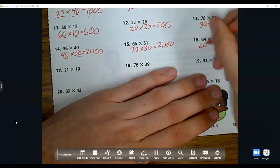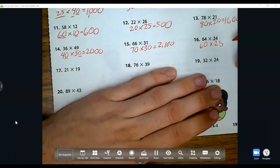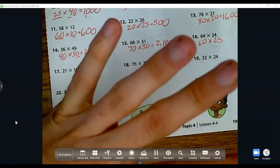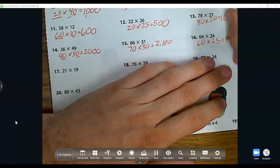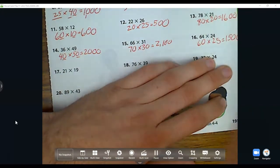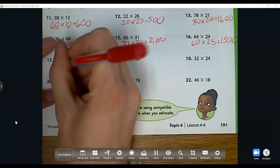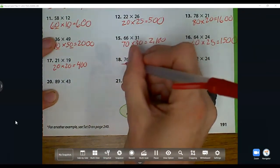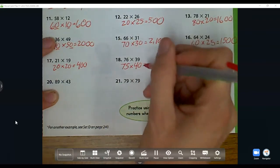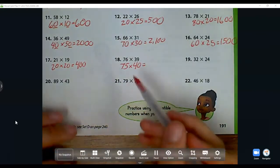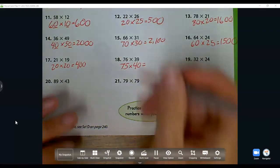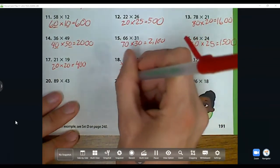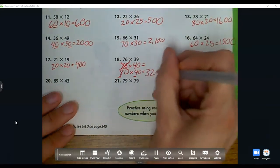Next: 64 is close to 60, 24 is close to 25. 6 times 25, that's 25, 50, 75, 100, 125, 150, and add that zero back on. 21 is close to 20, 19 is close to 20. 20 times 20 is 400. 76 is close to 75, 39 is close to 40. But 75 is not an easy number for me, so I'm going to change this to 80. 80 times 40, now I see my fact of 8 times 4, which is 32, and I add those two zeros back on.